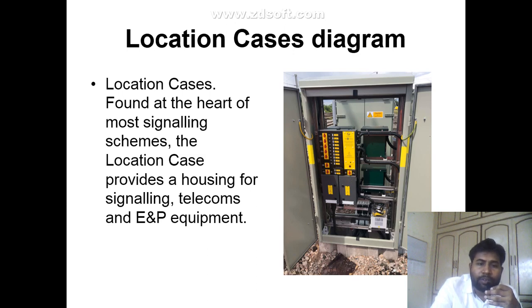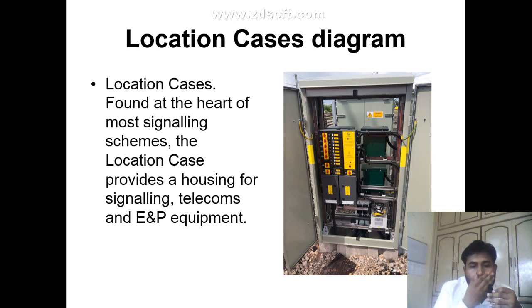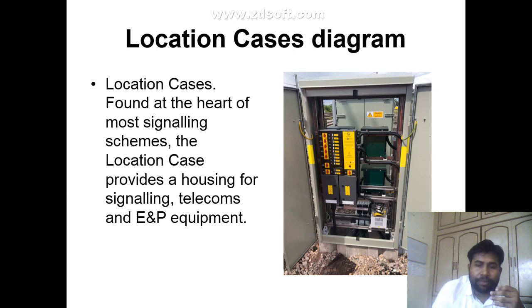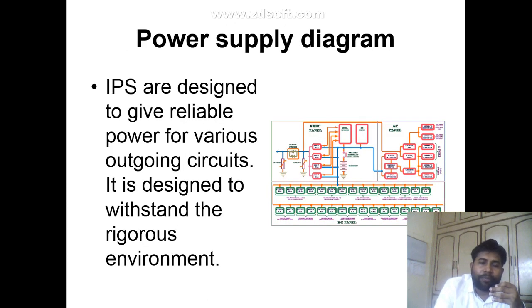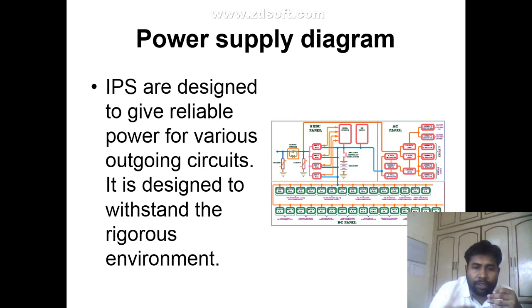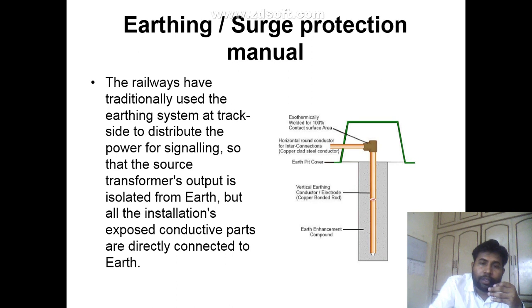Next is the location case diagram. The location case is found at the heart of most signaling schemes, providing housing for signaling, telecom and ENP equipment. Next is the power supply diagram. IPS power supplies are designed to give reliable power for various outgoing circuits and are designed to withstand the environment.